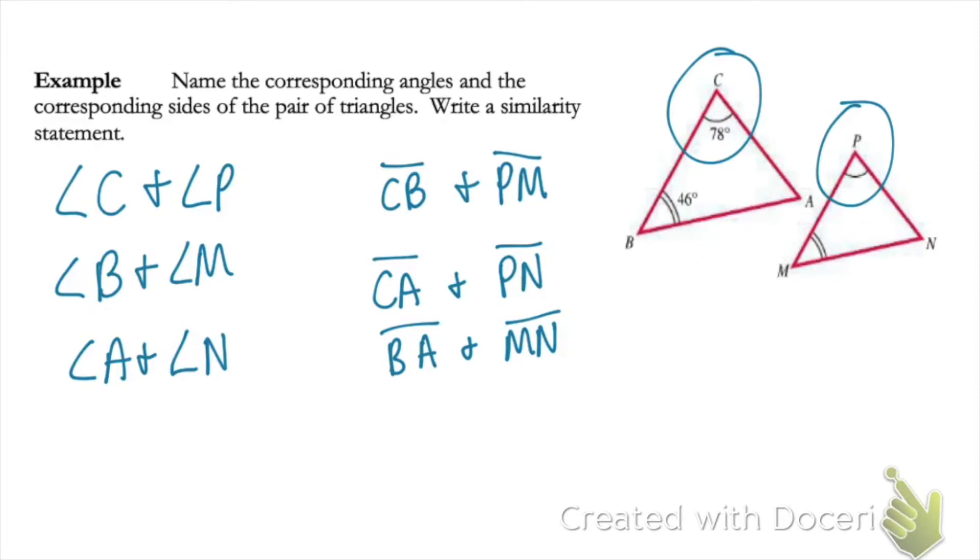So I'm first just going to write down triangle ABC for the first one. I need to be careful how I name my second triangle here. So I'm going to look and see which angle corresponds to angle A. That would be N. So I'm going to put N first, and then look for the angle that corresponds to angle B, which would be M. And then lastly, the angle that corresponds to C, which would be P.